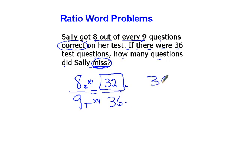Well if there are 36 questions on the test and she got 32 correct, that means that she got four wrong. So the answer is four questions.